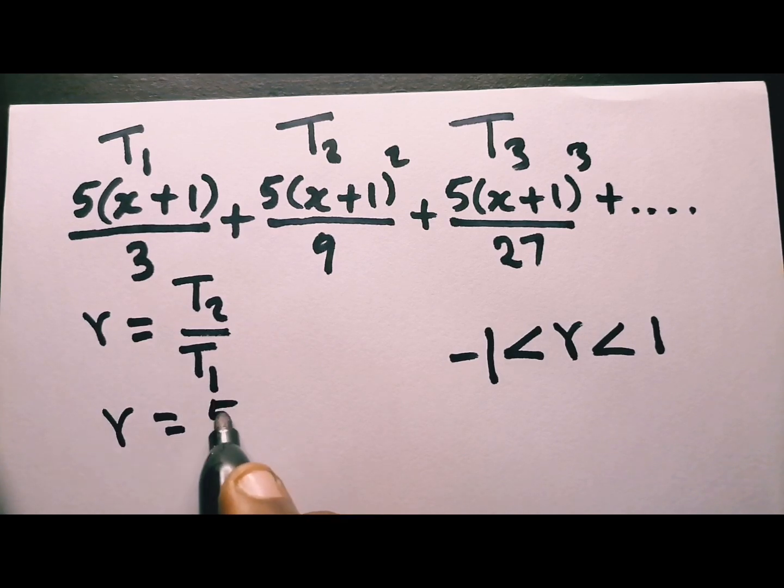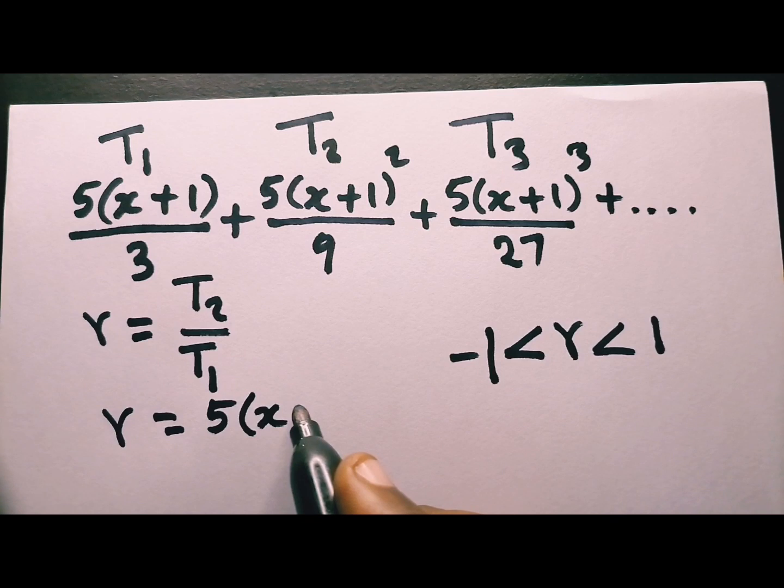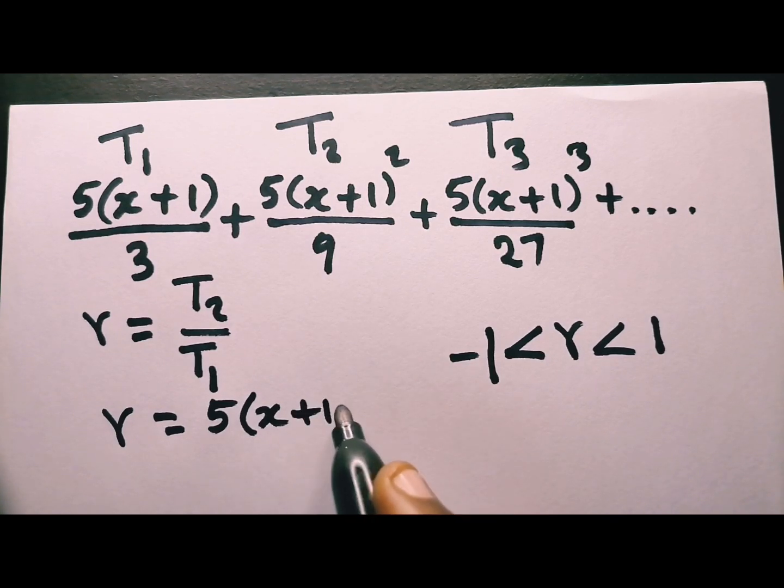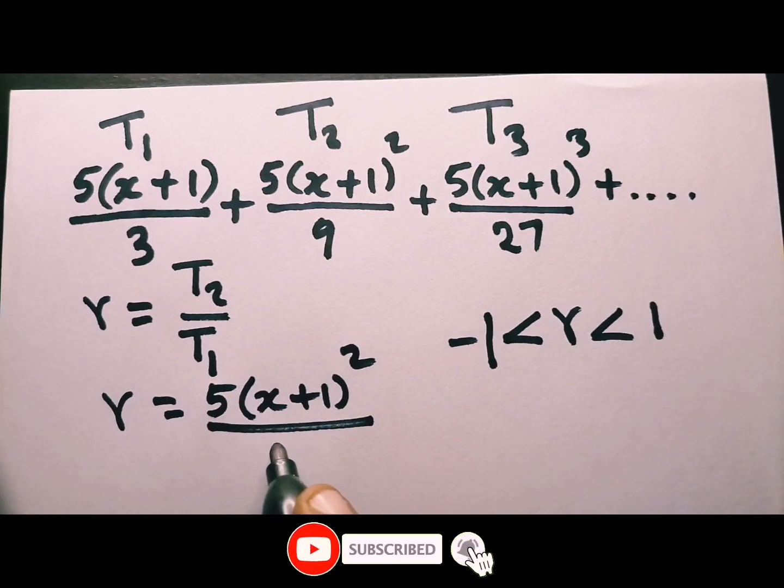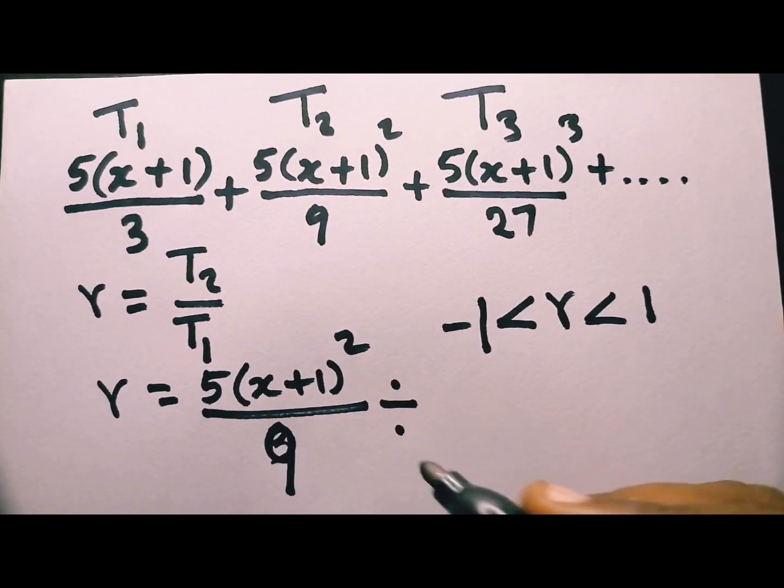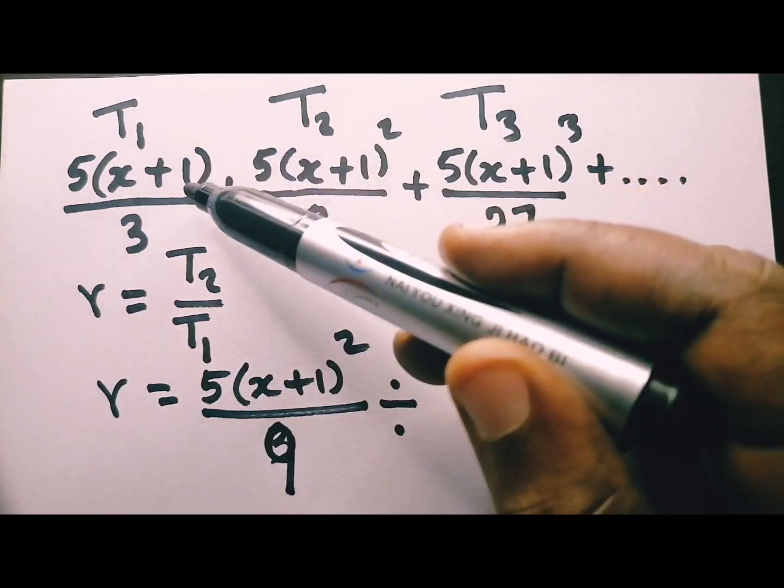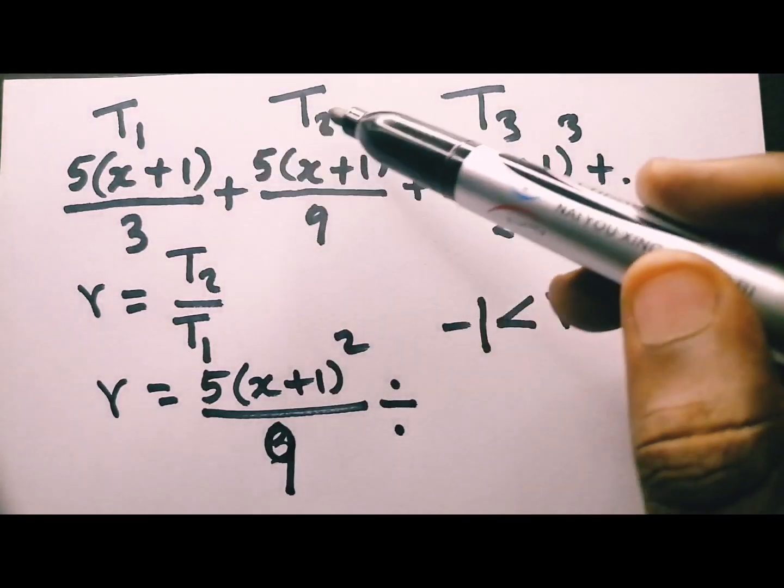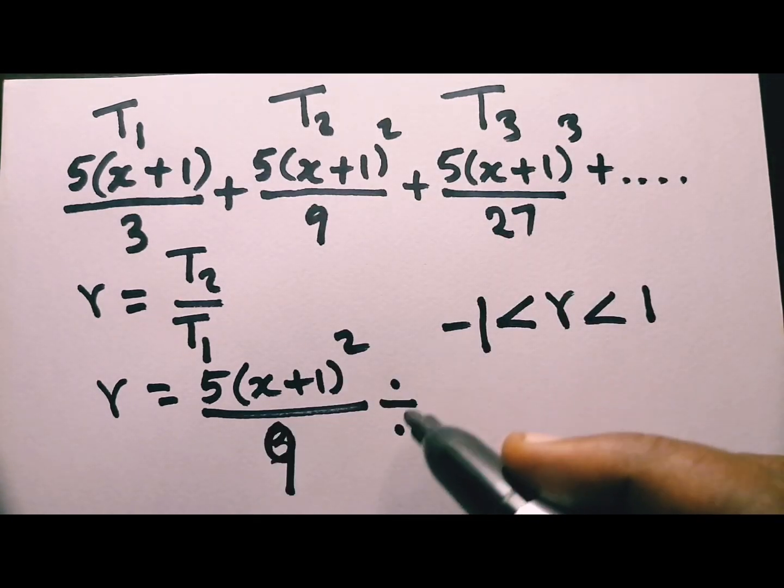Our T₂ is 5 into x plus 1 over 2, or power 2, all over 9. So I suggest, because of these divisions, or because this is a fraction, I suggest we do this style. Fraction, divide by, divide like this.